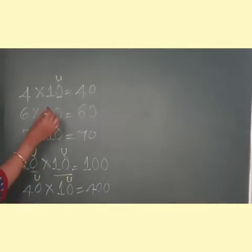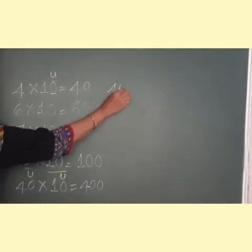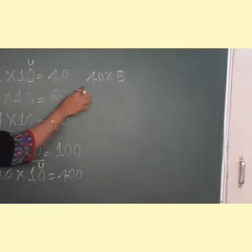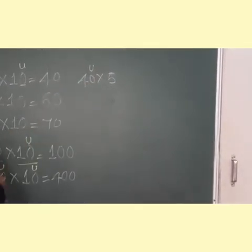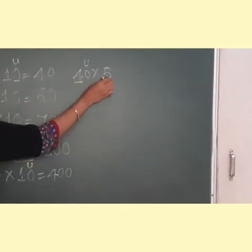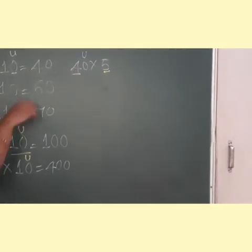In the same way, you can do if I say 40 multiplied by 5. So here, children, in the unit space, here it is 0. Then what are you going to do? 4 multiplied by 5.